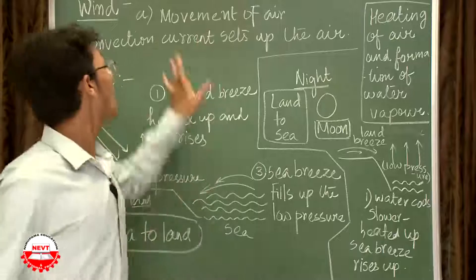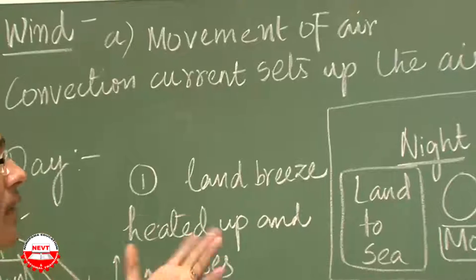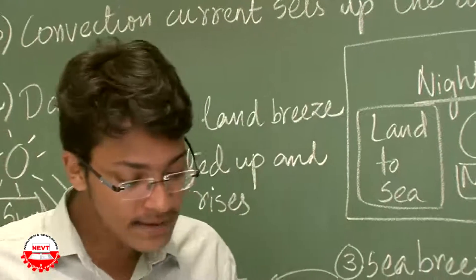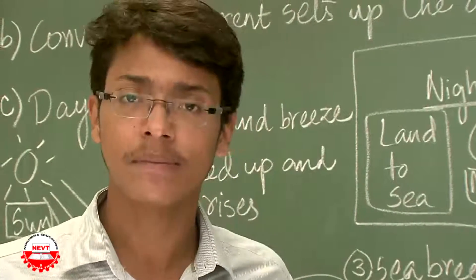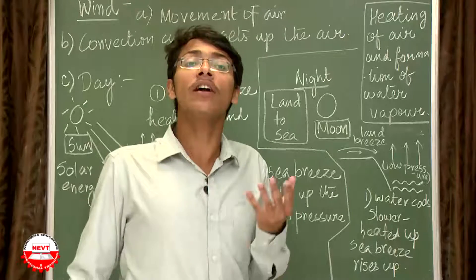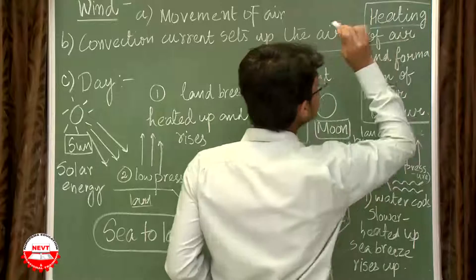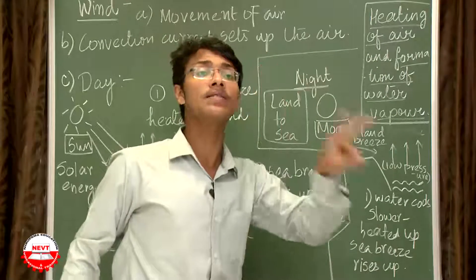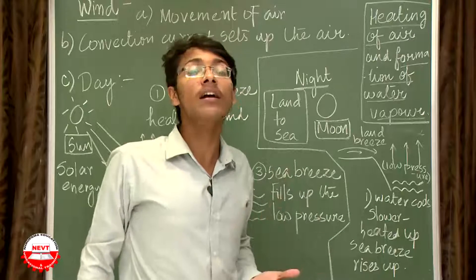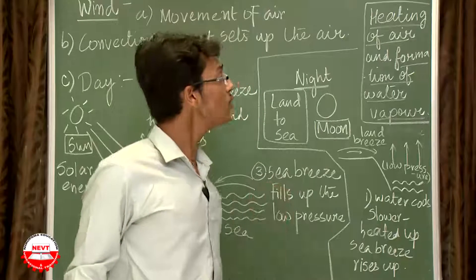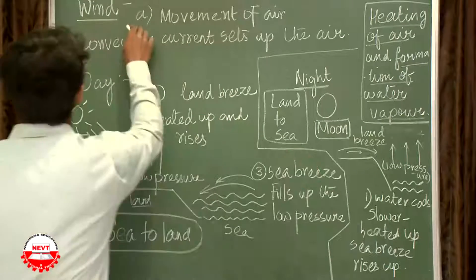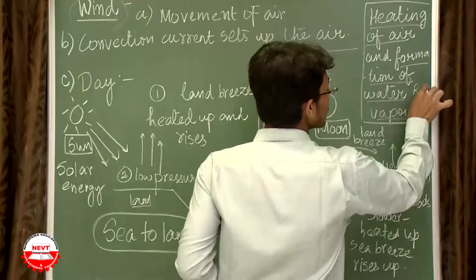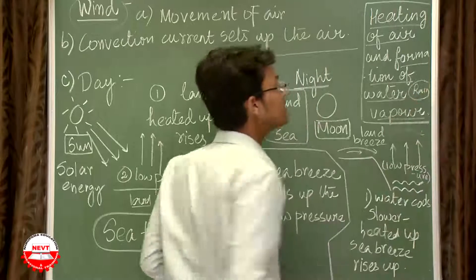Wind is the movement of air — when air moves it is called wind. In reality, the heating up of air and the formation of water vapor are what cause changes around us. The physical changes in our environment occur because of these two reasons: heating up of air and formation of water vapor. Heating up of air causes air to move, resulting in wind, and formation of water vapor causes rain.